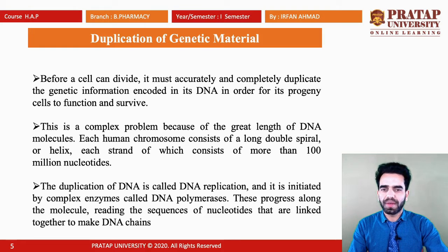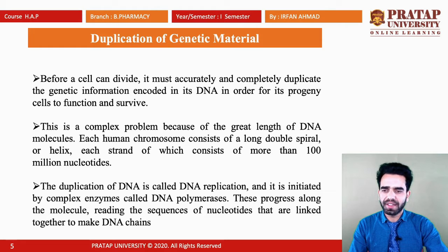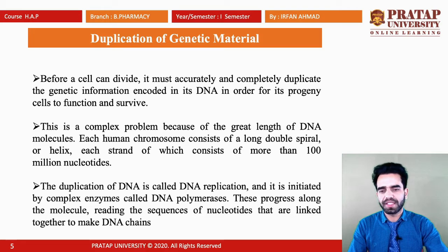This is a complex problem because the length of DNA is too great. Each human chromosome consists of a long double helix with more than 100 million nucleotides — a nucleotide being nitrogen base plus phosphate plus sugar. The duplication of DNA, called DNA replication, is initiated by various enzymes, for example DNA polymerase, which initiates the process of DNA replication.